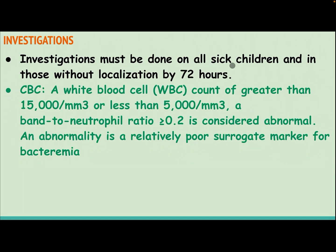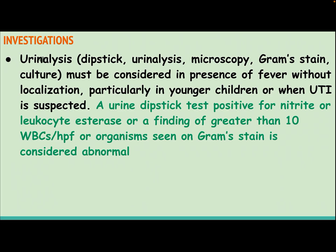Investigation must be done on all sick children and in those without localization by 72 hours. Complete blood count: a white blood cell count of greater than 15,000 or less than 5,000, and a band-to-neutrophil ratio more than or equal to 0.2, is considered abnormal. An abnormality is a relatively poor surrogate marker for bacteremia. Urine analysis — urinalysis with microscopy, gram stain, and culture must be considered in the presence of fever without localization. A dipstick positive for nitrate or leukocyte esterase, or greater than 10 white blood cells per high-power field, or organism seen on gram stain is considered abnormal.